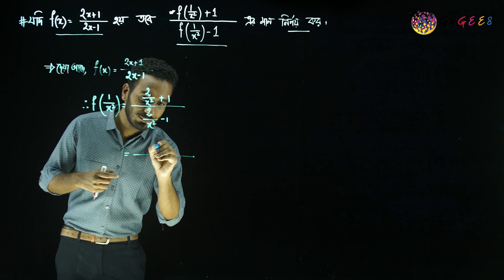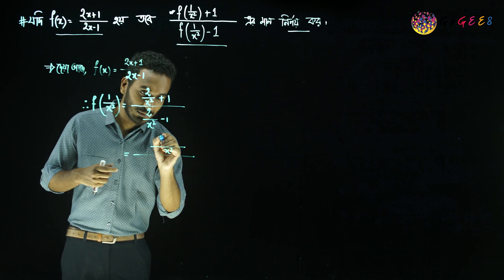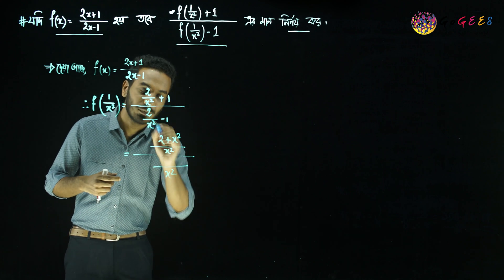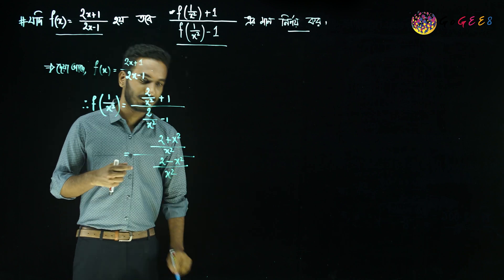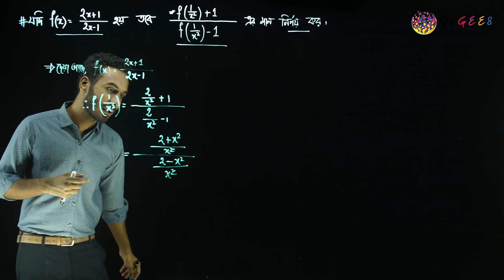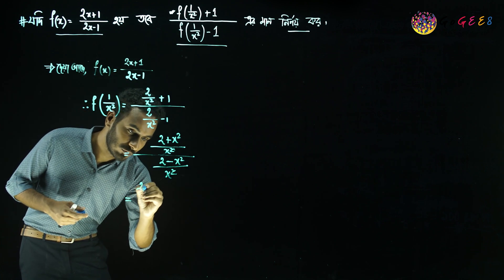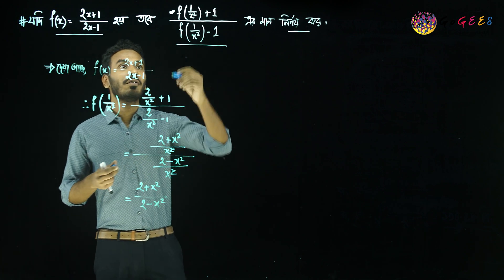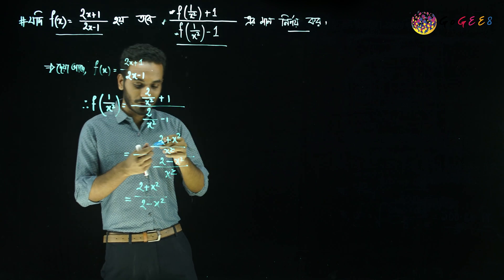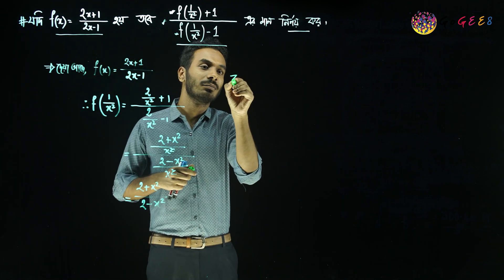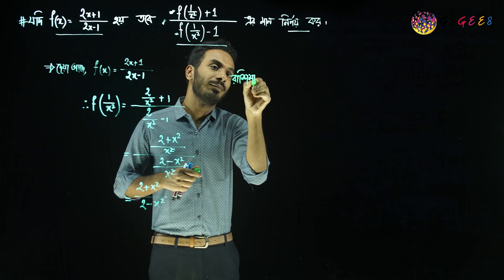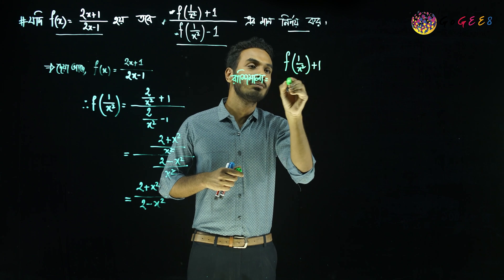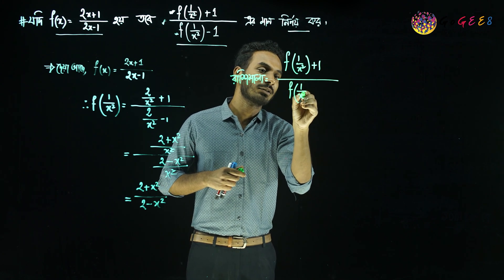So, I'll show you a good one. Into: 2 plus x square, 2 minus x square, 2 minus x square, 2 plus x square, by 2 minus x square, f of 1 by x square. Now let us find the right one: f of 1 by x square plus 1 divided by f of 1 by x square minus 1.